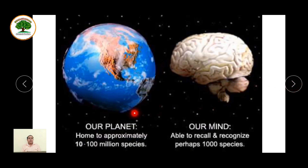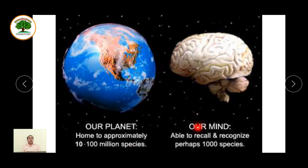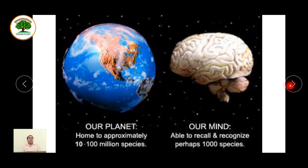This is required because our planet is home to approximately 10 to 100 million species, and even more that we don't know about. Our mind is able to recognize or recall perhaps only a thousand species. There are lots of data generated, so for identifying such large biological data, the information has to be stored in barcode form so that it's easy to access.